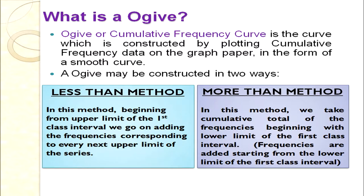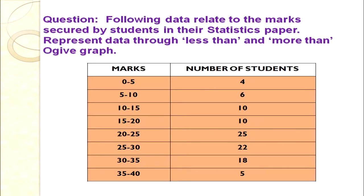For the more than method, we take the cumulative total of frequencies beginning with the lower limit of the first class interval — frequencies are subtracted starting from the lower limit. So for more than, we use lower limits. Let's take an example: marks and number of students are given; we will construct less than and more than cumulative series.